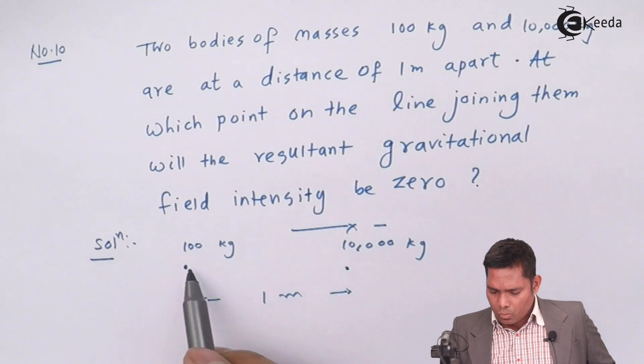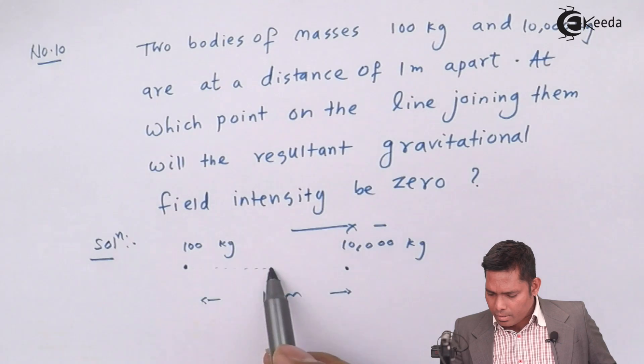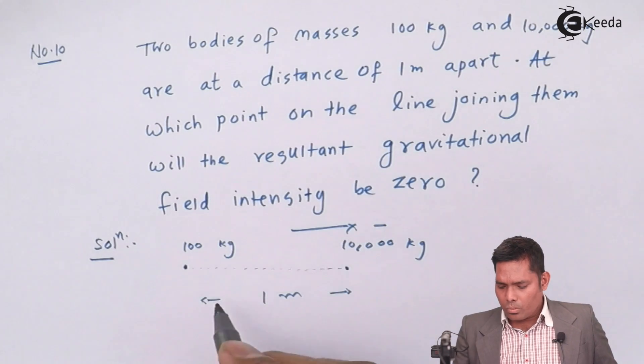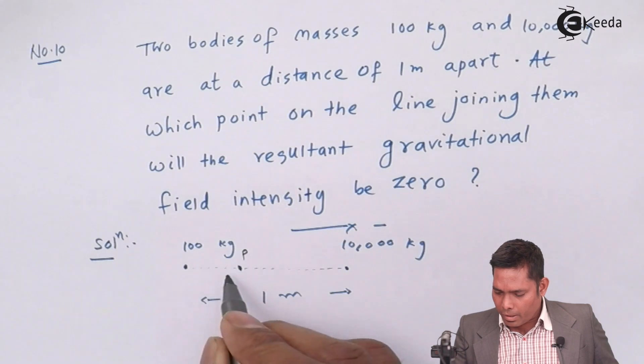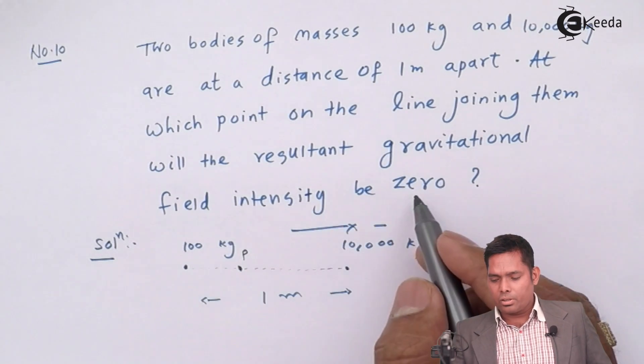Which point on the line joining the two - this is the line - which point, suppose this is the point P, where the gravitational field intensity is zero?